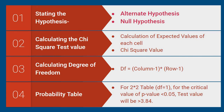Step one is stating the hypothesis. We need to state the alternative or research hypothesis and the null hypothesis. The null hypothesis says there is no significant difference between two categories, whereas the alternative or research hypothesis says there is a significant difference between two categories.